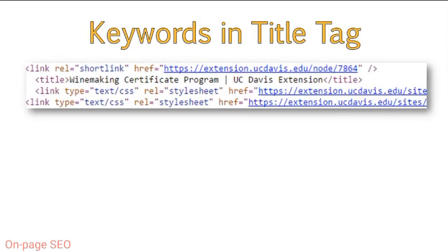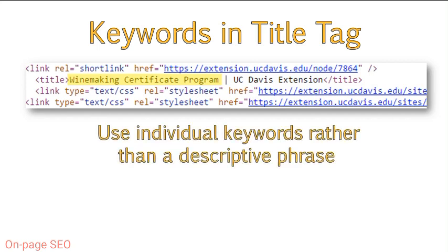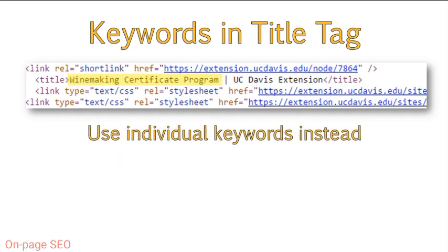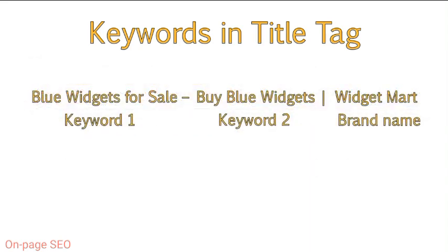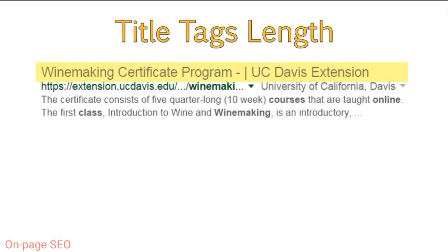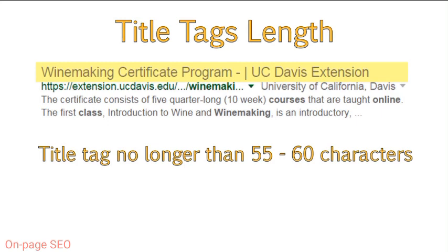In the previous example from UC Davis, their title tag used a description of the page, which was 'Wine Making Certificate Program.' You can also use individual keywords rather than a descriptive phrase. For example, if you owned a site called Widget Mart and wanted to optimize a page which sold blue widgets, you could use individual keywords instead. In this case, you should separate your keywords with hyphens. For example, you may make your title tag: 'blue widgets for sale - buy blue widgets | Widget Mart.' I recommend making sure each title tag is no longer than 60 characters in length, and it's best to try to keep title tags around 55 characters just to be safe.